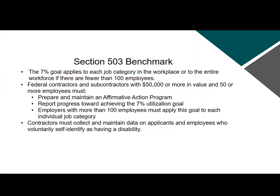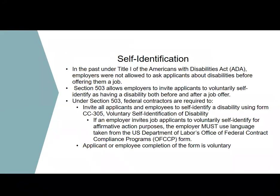Contractors must collect and maintain data on applicants and employees who voluntarily self-identify as having a disability. In the past, under Title I of the Americans with Disabilities Act, employers were not allowed to ask applicants about disabilities before offering them a job. Under Section 503, employers may now invite applicants to voluntarily self-identify as having a disability both before and after a job offer. Federal contractors are required to invite all applicants and employees to self-identify using Form CC-305, the Voluntary Self-Identification of Disability form.